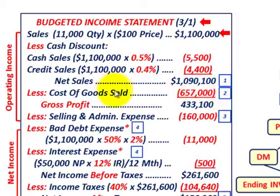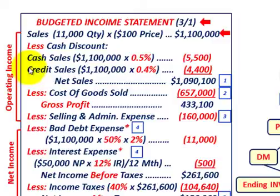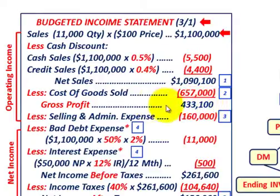From net sales of $1,090,100, we subtract cost of goods sold of $657,000, giving us a gross profit of $433,100. We then subtract selling and administrative expenses of $160,000, which completes our operating income section.